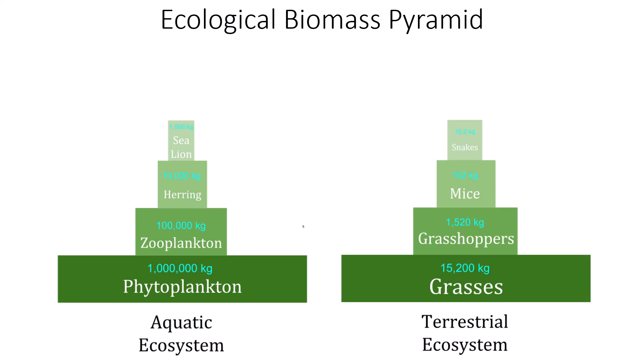The ecological biomass pyramid follows the same concept — still a pyramid, still decreasing at every level, until we reach a point where we can't feed on the top level any further. It doesn't matter if you're talking about an aquatic or a terrestrial ecosystem. Ecological biomass pyramids account for the actual physical mass of the organisms that feed at each particular level.